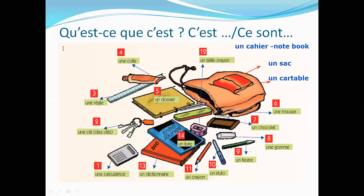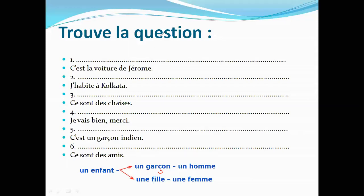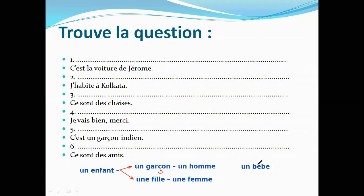A pair of scissors in French is 'des ciseaux' — it is always used in the plural form and is masculine. Then, 'un enfant' means a child and can refer to male or female. A boy is 'un garçon' and a man is 'un homme.' In feminine: 'une fille' means a girl and 'une femme' means a woman. Going back one more step, 'un bébé' means a baby — it can refer to a male or female baby, but the word 'bébé' is masculine.